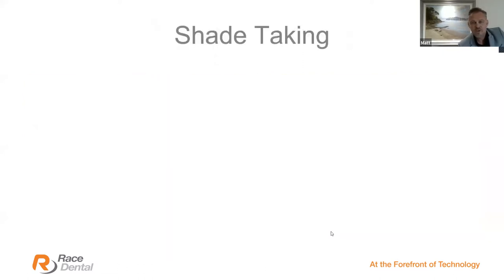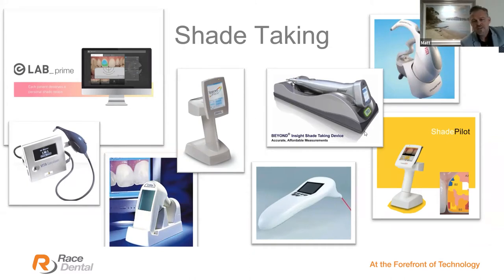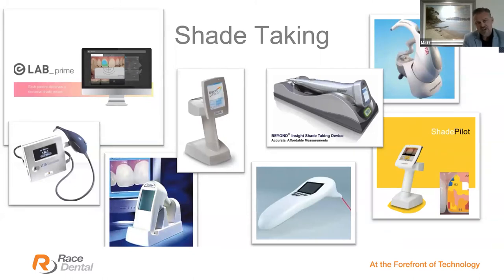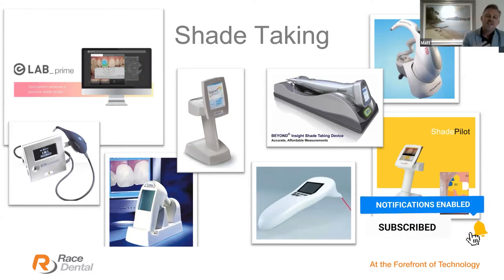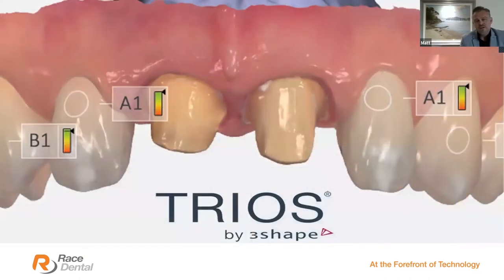There's a plethora of different shade-taking technologies that have come out over the years. Up in the right-hand side we can see Vita's shade-taking system that registers the shade. Down the bottom left was the Shade Vision system from X-Rite — the first system that enabled technicians to do virtual try-ins, about 15 to 16 years ago. Shade Pilot on the right-hand side made it a little easier to read shades. The Elab Prime system is a newer version for virtual try-ins and gives inexperienced technicians a good starting point.